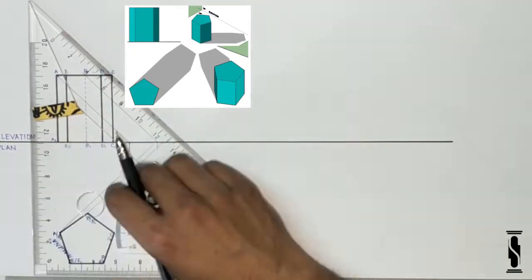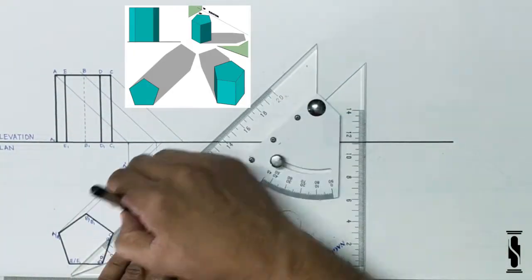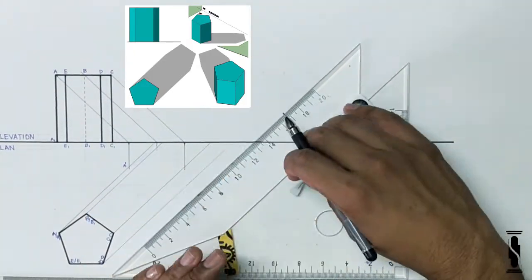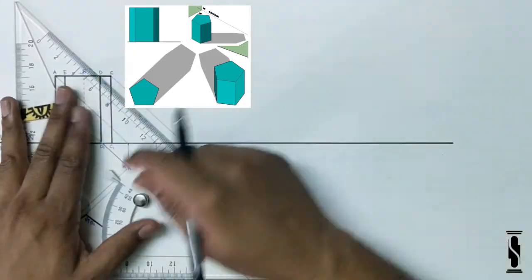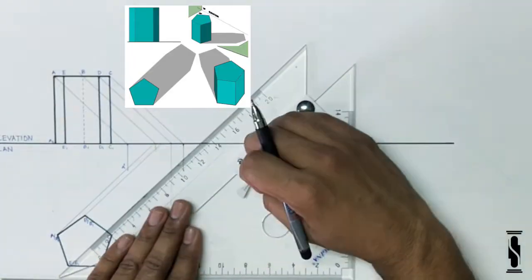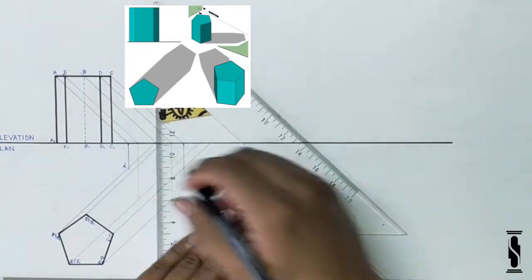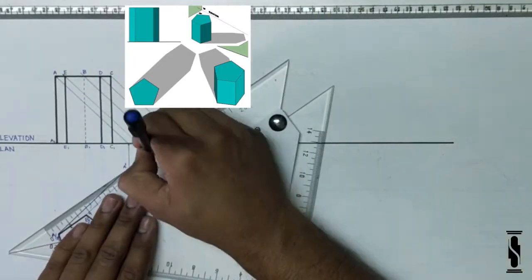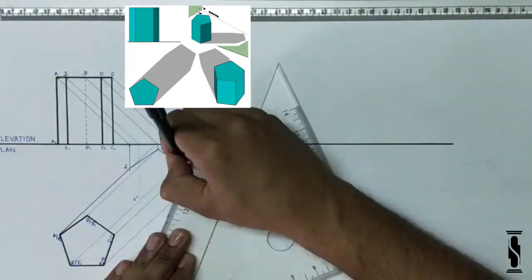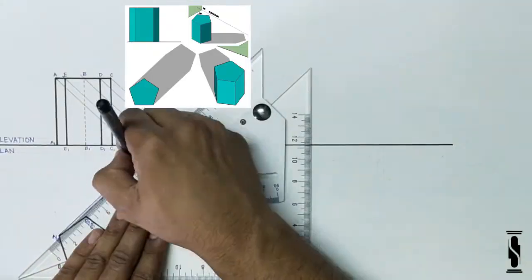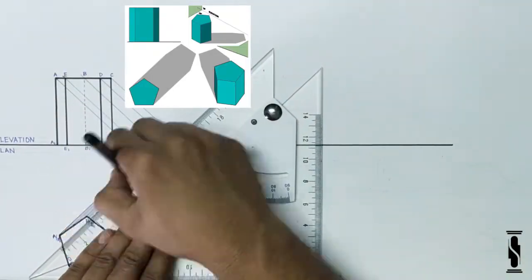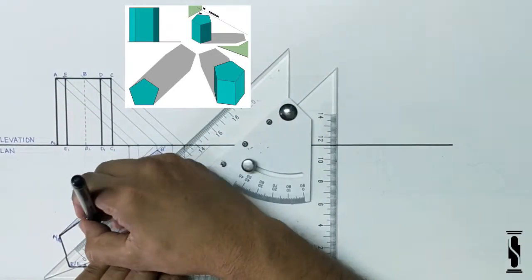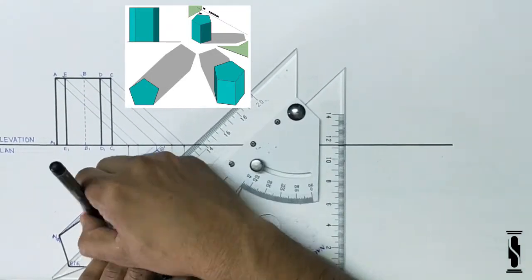Now repeat the same process for points B, C, D, and E, and join the points A1, A dash, B dash, C dash, D dash, D1 to get the final shadow profile. We can clearly see that the shadow of point E is merging into the shadow of points ABCD. Now hatch the shadow profile with the light intensity line.